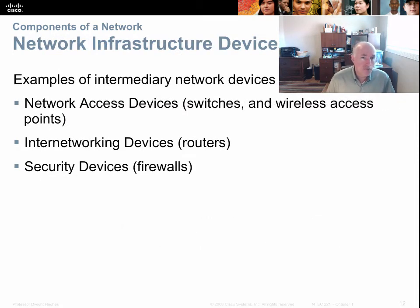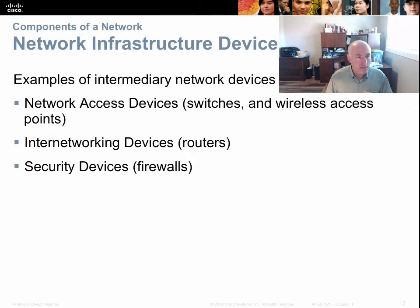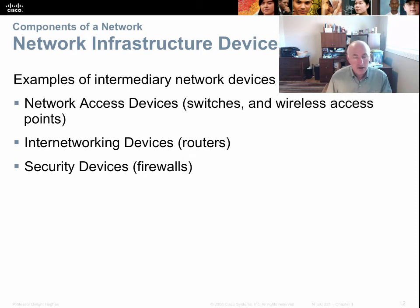Another type of device is the network infrastructure device. These are not at the ends of the network — they're in the middle, and their job is to move data. They're the postal workers of the network. Infrastructure devices include routers, switches, hubs, wireless access points, and firewalls. Their job is not to be the recipient or sender of data; they're the intermediary that helps move data along toward its destination.